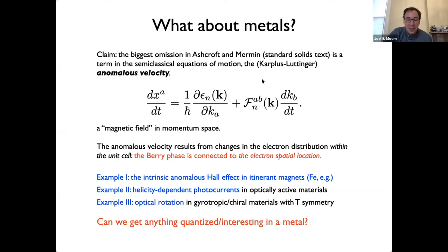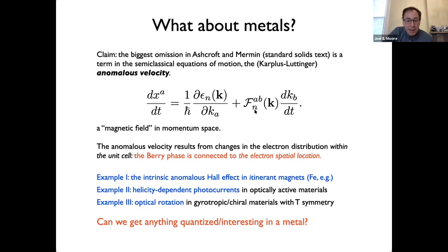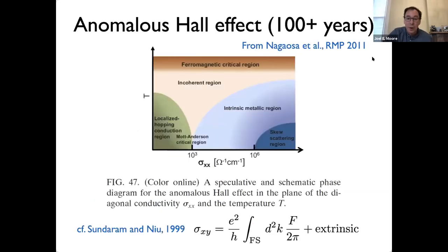We then started thinking about what other effects would let you see the anomalous velocity more clearly. In general the way things work in ordinary metals — as opposed to topological semi-metals — is that geometric quantities can still give measurable physics, but maybe without quantization: there's always something that depends on the details of the Fermi surface. Let's see if that's still true. The anomalous Hall effect is an enormous field of physics.